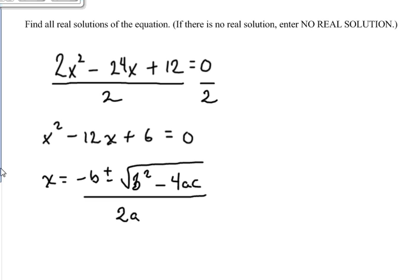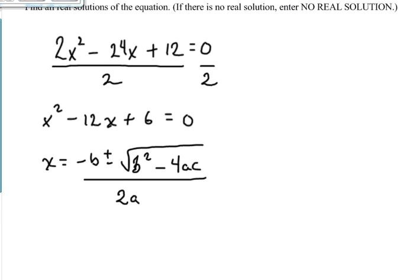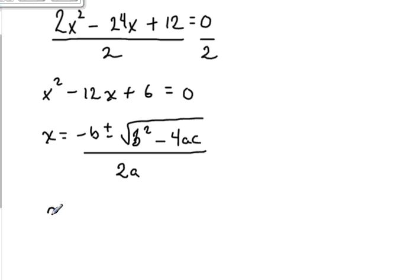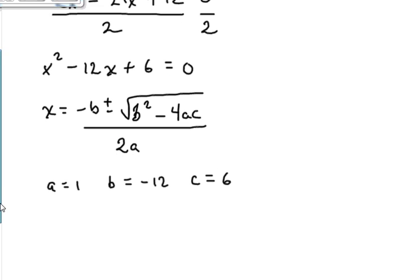a is the number that is in front of the x squared variable, and c is the constant. So we can write down here that a equals 1 because there's no number in front of x squared. B equals negative 12 because that's the number in front of x, and the constant is just 6.